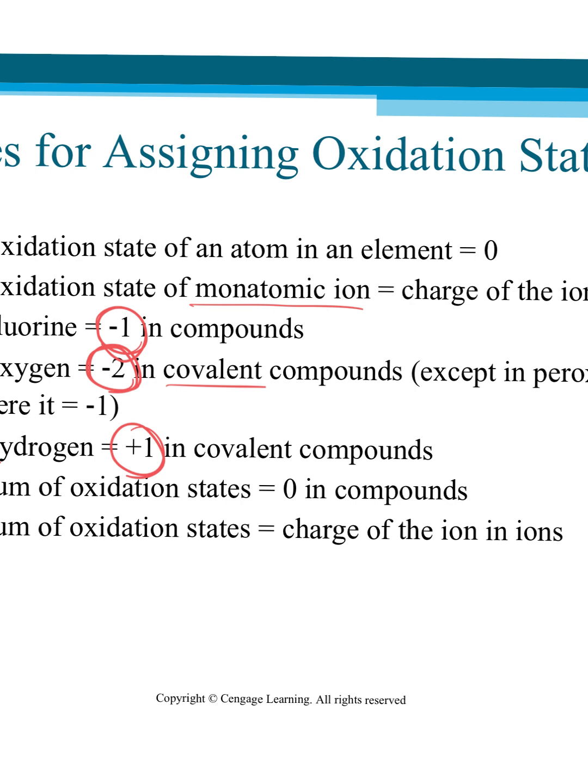So those are the big three. And they get precedence. So if you have both fluorine and oxygen, you put in fluorine's oxidation number first. And then if you have to adjust oxygen, you can. So it just depends. But they take precedence in that order. So fluorine, oxygen, hydrogen.